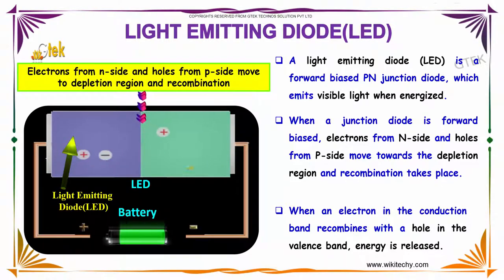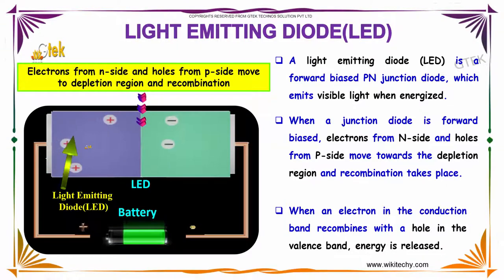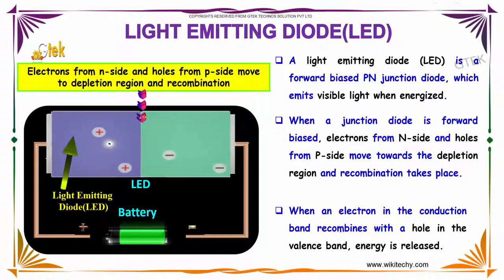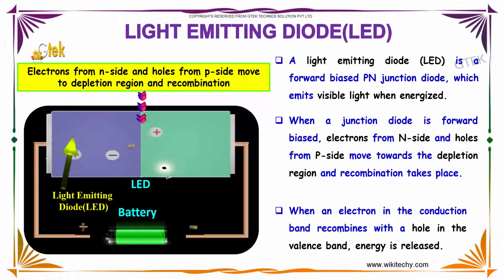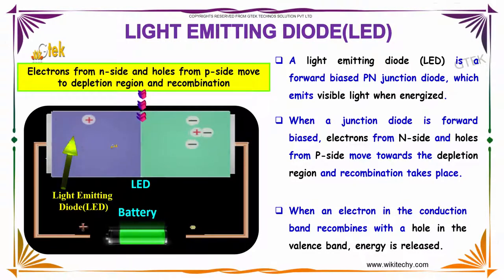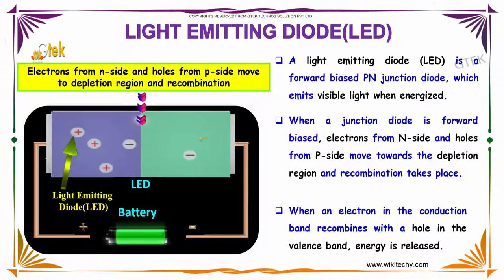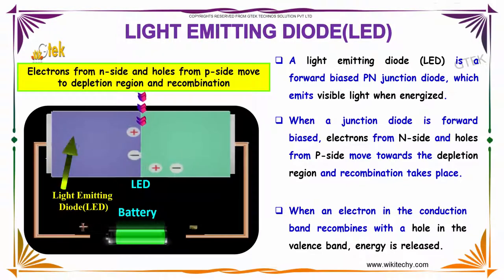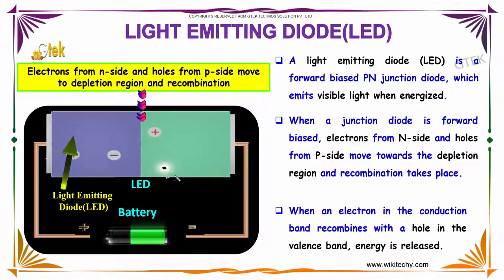When a junction diode is forward biased, electrons from the N side and holes from the P side move towards the depletion region and recombination happens, and you are able to see the light being emitted. When the electron in the conduction band recombines with the hole in the valence band, the energy is reduced and it is released. You are able to see the energy is released.